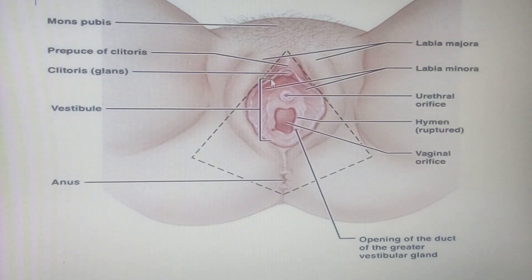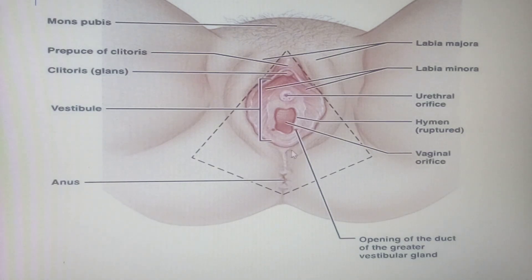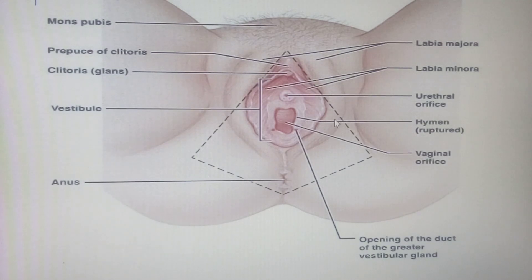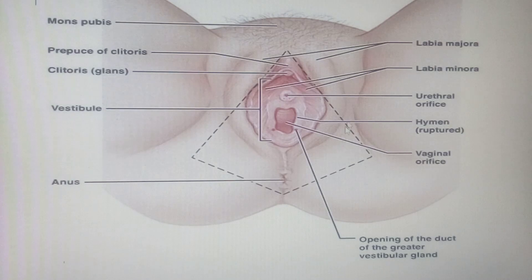The labia minora — right and left — meet posteriorly to form what we call the fourchette. The labia minora is formed from what we call genital folds or genital swellings, whereas the labia majora was formed from labioscrotal swellings.